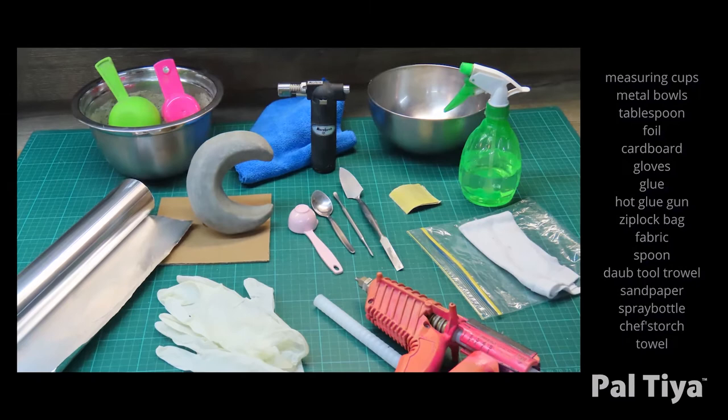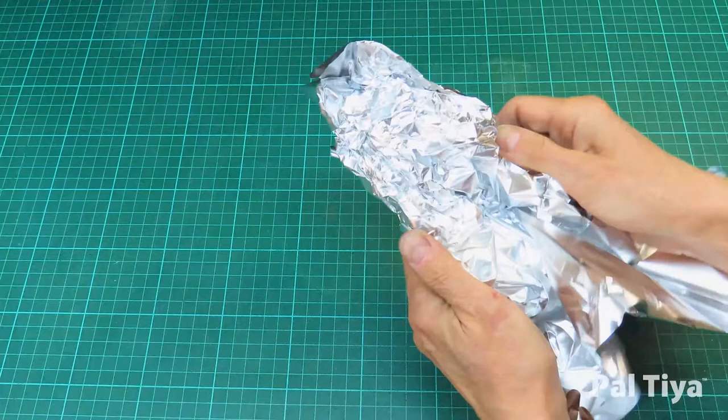Here's all the tools you'll need. Pause the video to screenshot the full list. Always use the foil shiny side in and dull side out, that way your eye can see the shapes better.